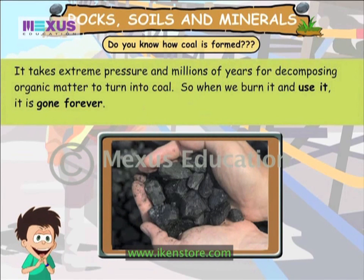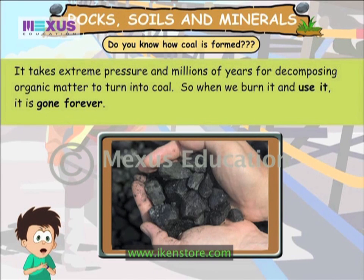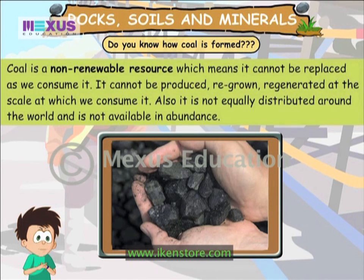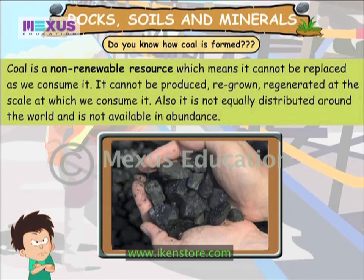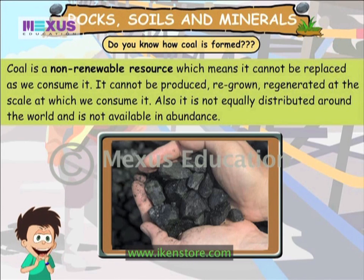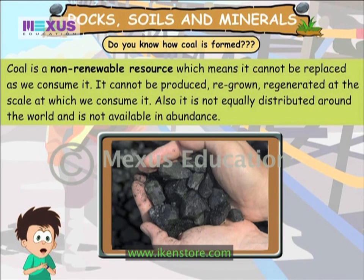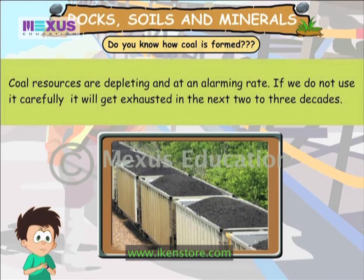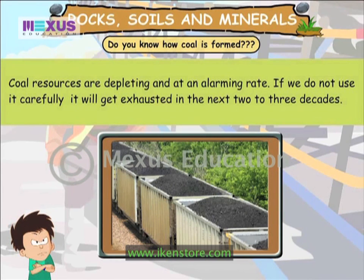It takes extreme pressure and millions of years for decomposing organic matter to turn into coal. So when we burn it and use it, it is gone forever. Coal is a non-renewable resource, which means it cannot be replaced as we consume it. It cannot be produced, regrown or regenerated at the scale at which we consume it. It is not equally distributed around the world and is not available in abundance. Coal resources are depleting at an alarming rate. If we do not use it carefully, it will get exhausted in the next 2-3 decades.